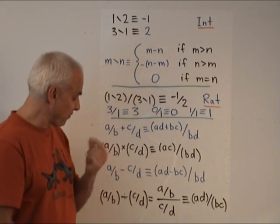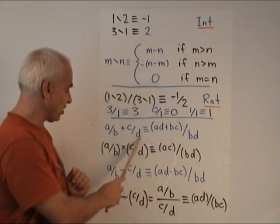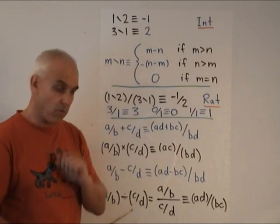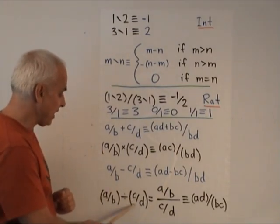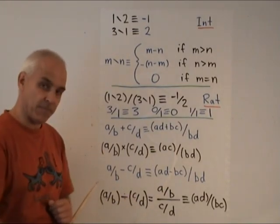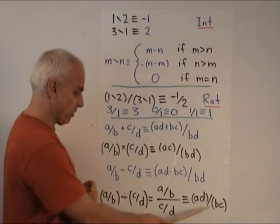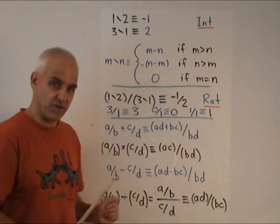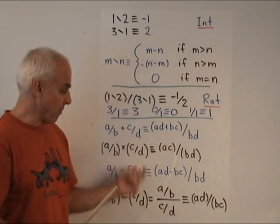There's just a bit of qualification in all of these, the denominators cannot be 0. And when we divide, we have to make sure that c is not equal to 0, because otherwise we would be dividing by 0. So division by 0 is not allowed.